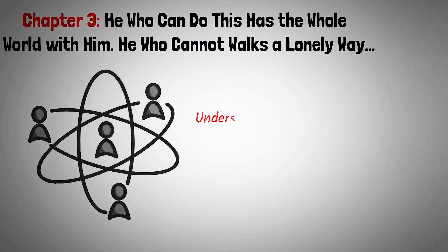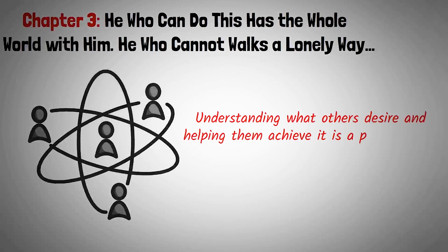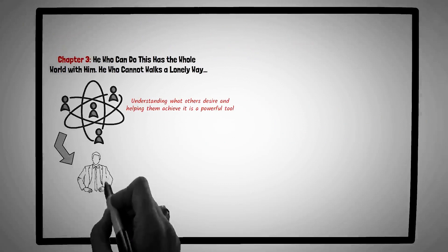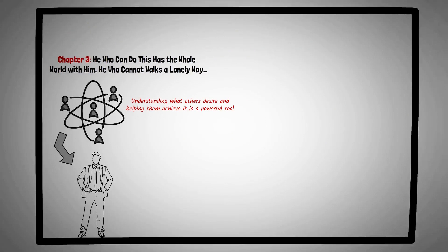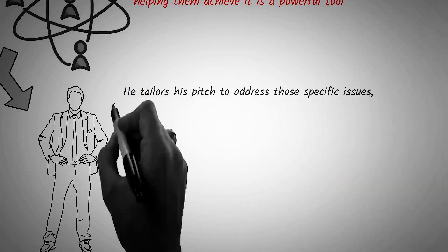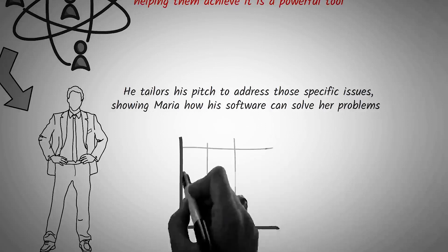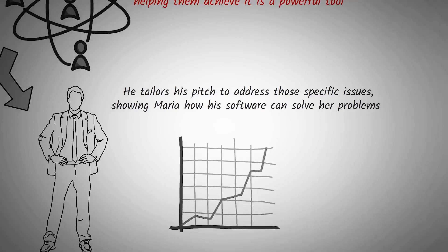Chapter three, he who can do this has the whole world with him. He who cannot walks a lonely way. In the realm of human interactions, understanding what others desire and helping them achieve it is a powerful tool. This chapter delves deep into the art of arousing an eager want in others, highlighting its significance in building strong, lasting relationships. Consider James, a salesperson trying to pitch a new software solution to a potential client, Maria. Instead of bombarding her with technical jargon and features, James first asks Maria about the challenges her company faces. Learning about her needs, he tailors his pitch to address those specific issues, showing Maria how his software can solve her problems. By focusing on what Maria eagerly wants, James not only makes a successful sale, but also establishes a foundation of trust and understanding.